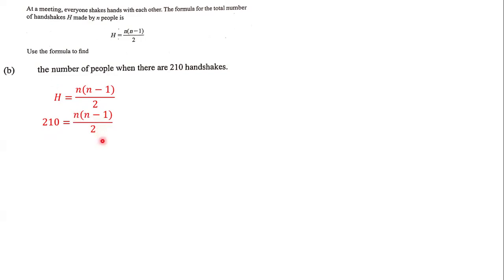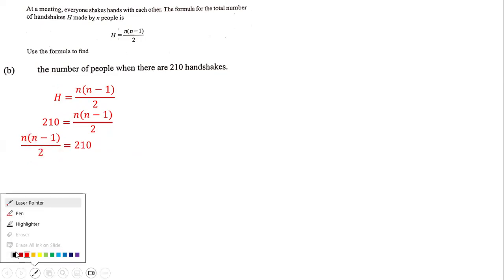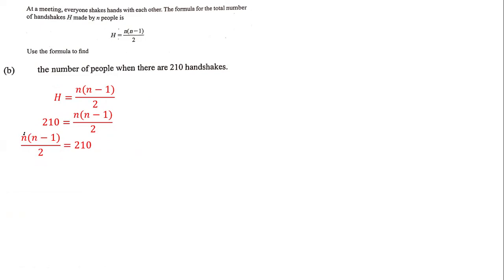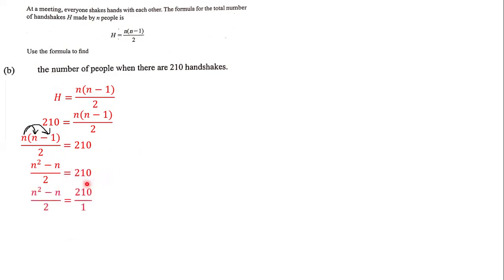Our goal is to solve for n, so we rearrange the equation with 210 on one side. We distribute: n times n gives n squared, and n times negative 1 gives negative n. So we have (n² - n)/2 = 210.